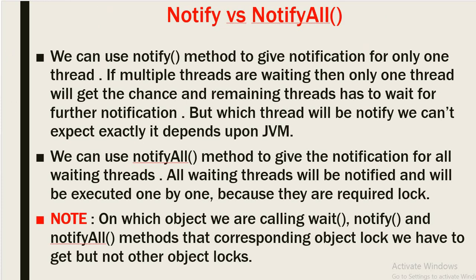The difference between notify and notifyAll: we can use notify to give notification to only one thread. If multiple threads are waiting, only one thread will get the chance and the remaining threads have to wait for further notification — and which thread gets notified depends on the JVM. We can use notifyAll to give notification to all waiting threads; they will execute one by one because they all require the lock. Note: whichever object you call wait, notify, or notifyAll on, you must hold that corresponding object's lock.